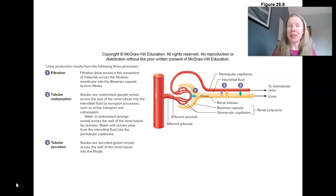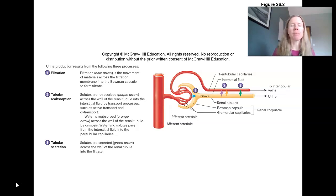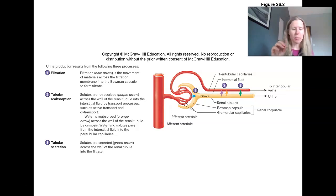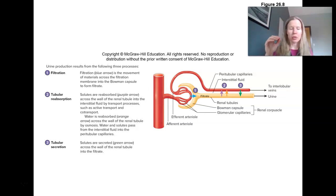Diving deeper into how urine is actually formed. These are the three main processes I was mentioning in the last video. As part of urine production, the first thing that happens is filtration — this blue arrow is showing us that the blood in the glomerulus is getting filtered. The filtrate that gets through enters the Bowman's capsule, and then it goes into these renal tubules.